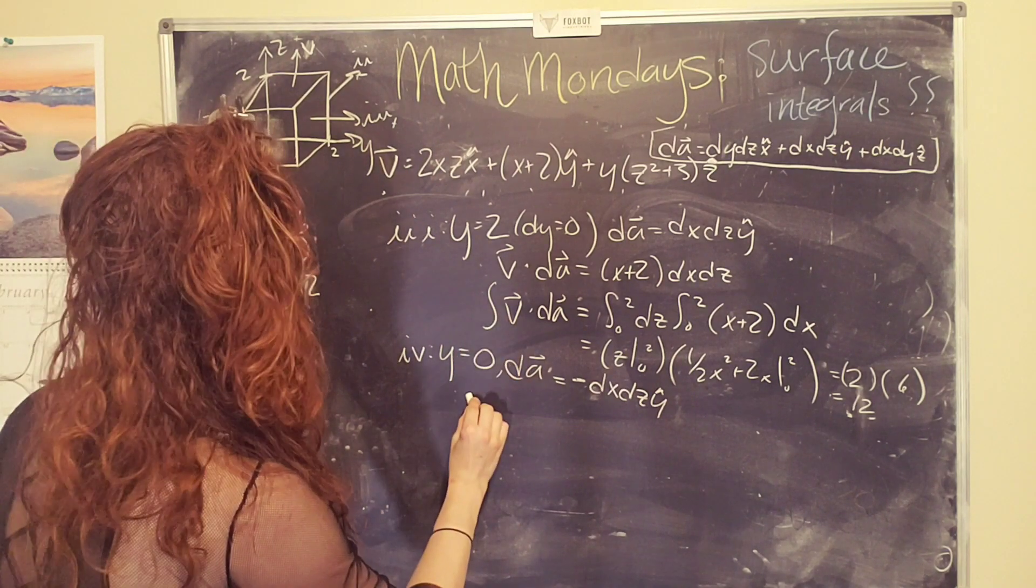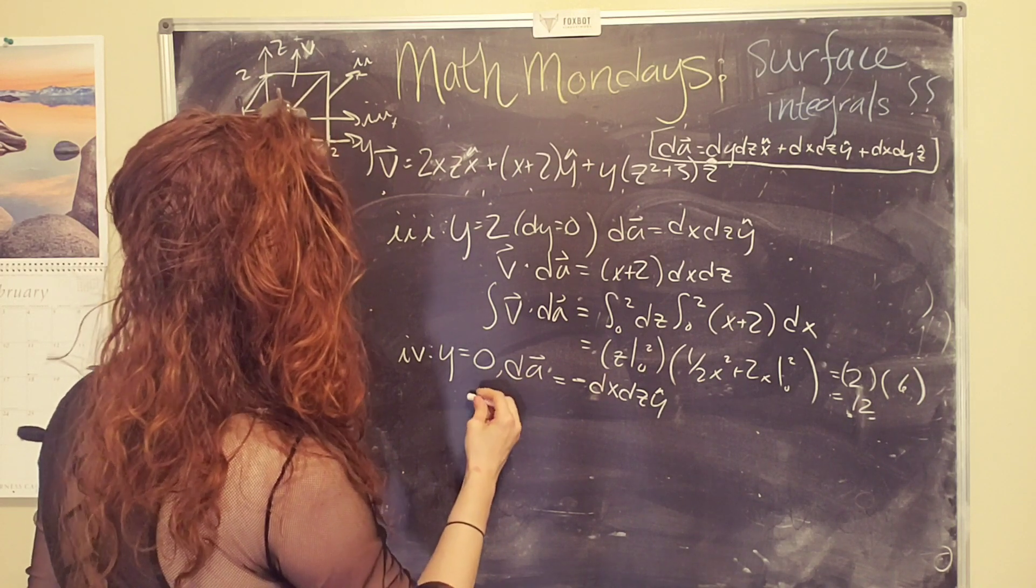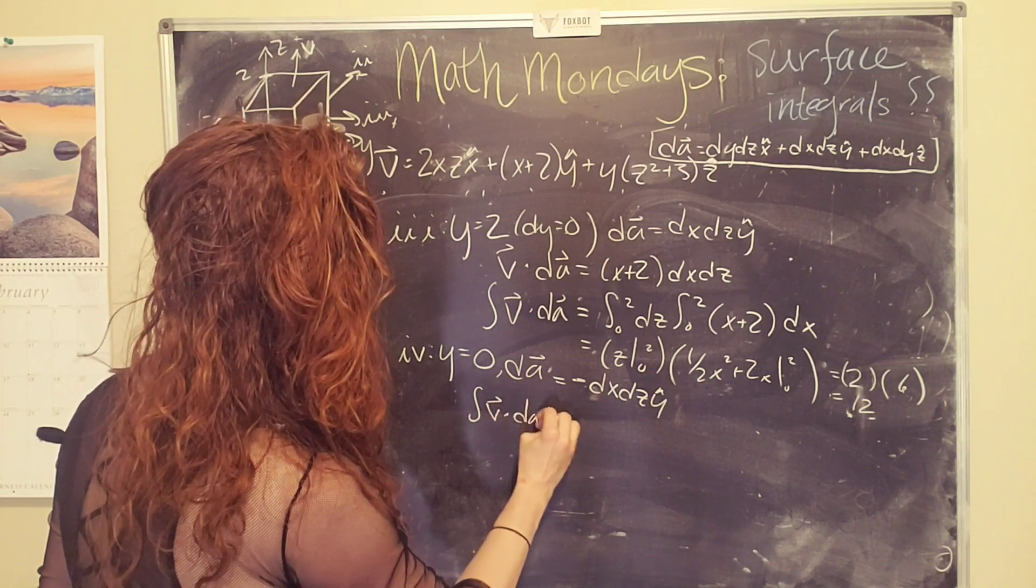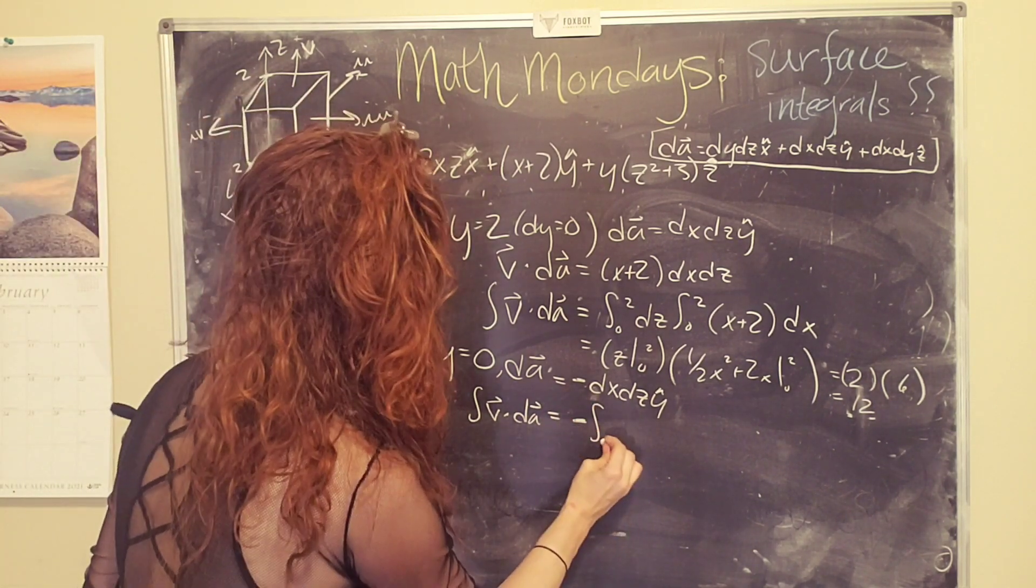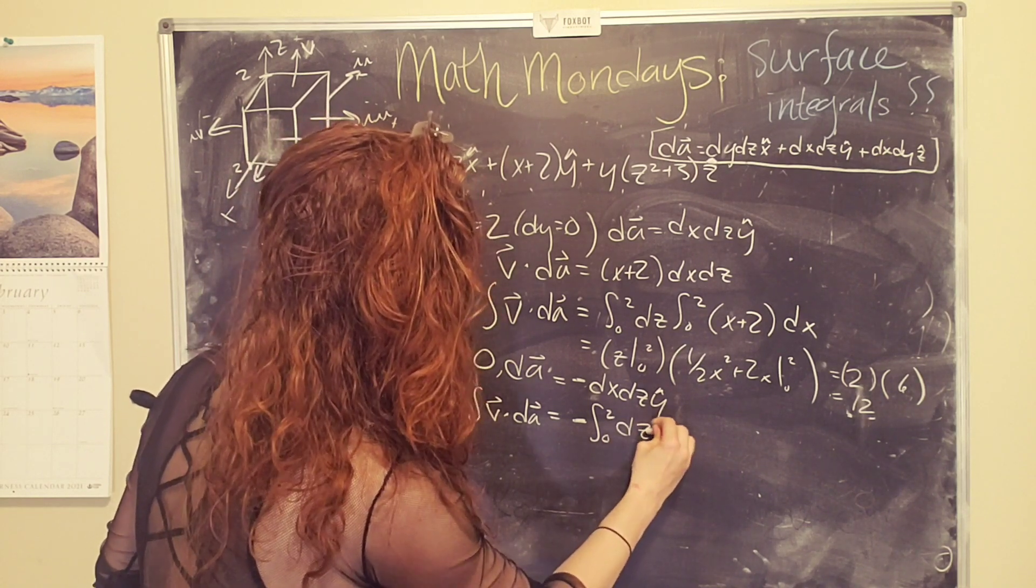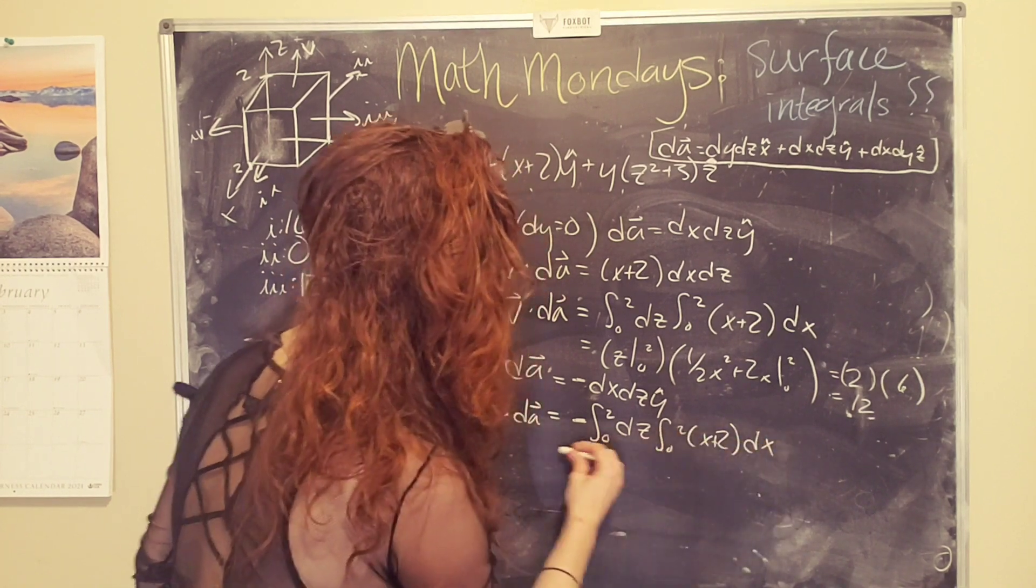So now, v dot dA is (x + 2), but it's going to have a negative. So our integral v dot dA is going to have a negative out front. And we're going to do the z one again first, zero to two dz times zero to two (x + 2) dx.